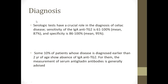For diagnosis, serological tests play a crucial role. The sensitivity of IgA anti-tissue transglutaminase antibodies is 61 to 100 percent (mean 87 percent) and specificity is 86 to 100 percent (mean 95 percent), so they are more specific than sensitive. For the approximately 10 percent of patients diagnosed before two years of age or those lacking IgA anti-tissue transglutaminase antibodies, measurement of serum anti-gliadin antibodies is generally advised.